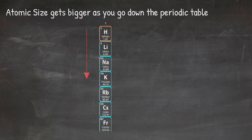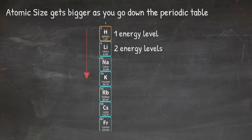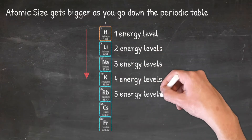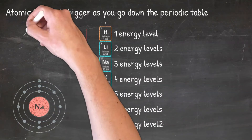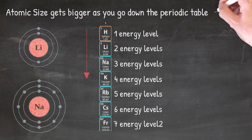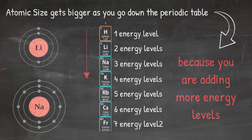Each of these elements, while in the same group, are in different periods. Hydrogen is in period one, so it has one energy level. Lithium is in period two, so it has two energy levels, while sodium is in period three, so it has three energy levels. This continues all the way down to francium, which has seven energy levels. The more energy levels we have, the bigger the atom is getting because we are adding more rings, which you can see here when I compare the Bohr model of lithium to the Bohr model of sodium. You can see that sodium is bigger, and that is because it has one more energy level than lithium. So as you go down the periodic table, atoms get bigger because you are adding more energy levels.